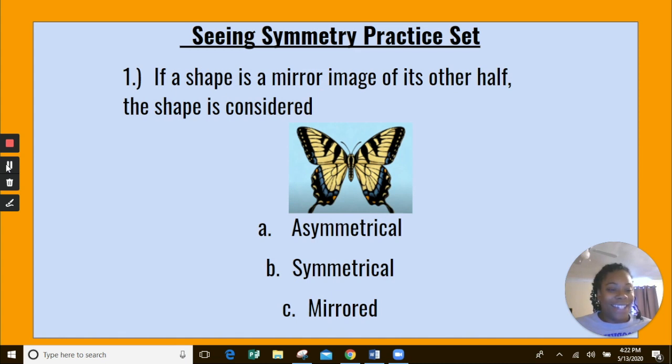Number one: If a shape is a mirror image of its other half, the shape is considered what? A. Asymmetrical, B. Symmetrical, or C. Mirrored. Pause the video and answer the question now.